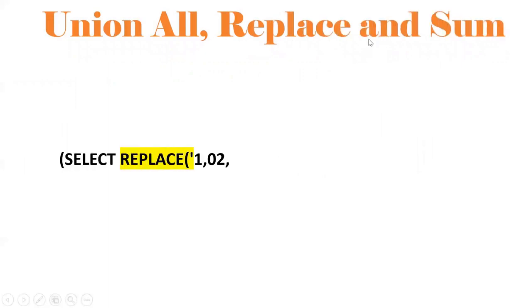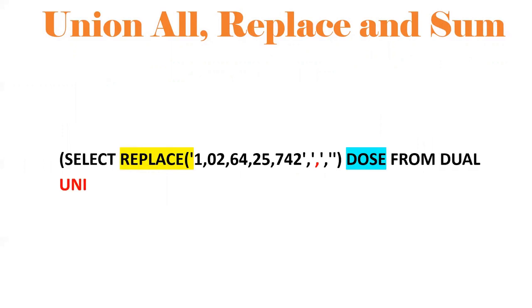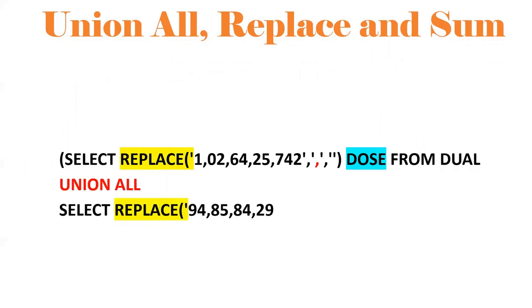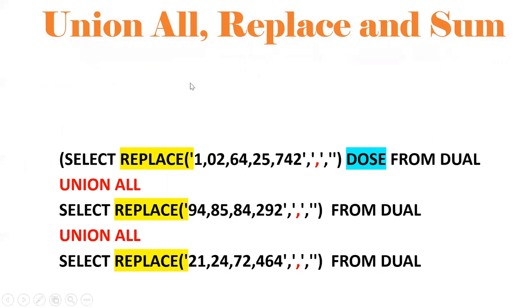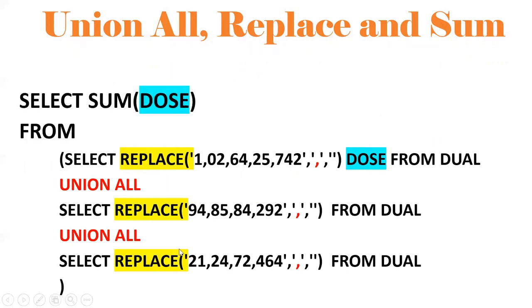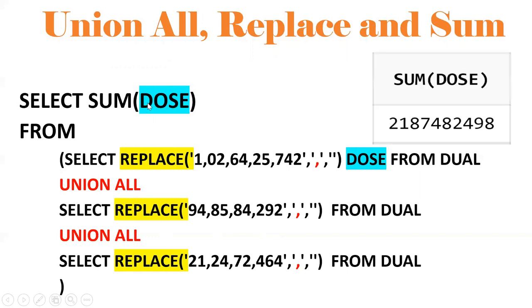Now I'll add one more concept: UNION ALL, REPLACE, and SUM — the aggregate function. I want to find the total, which I can get using the aggregate function SUM. So SUM of dose — from the three result sets I get three values, and applying SUM gives me one total value.